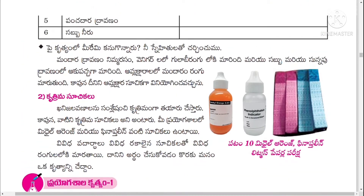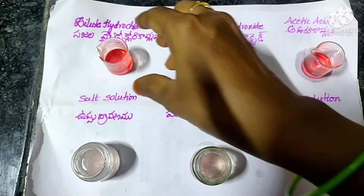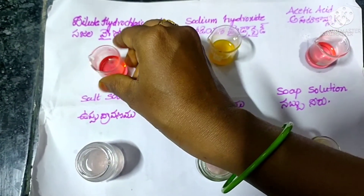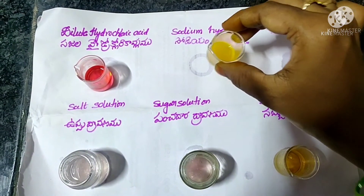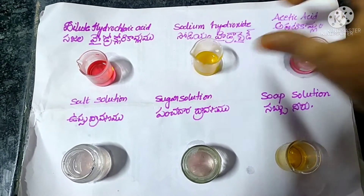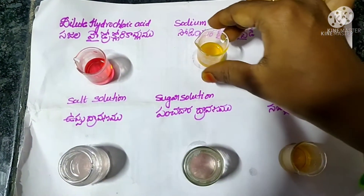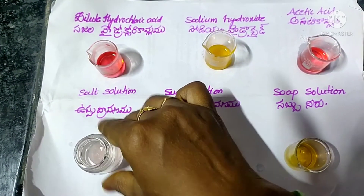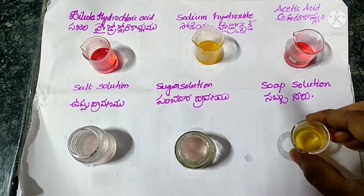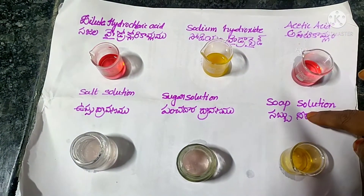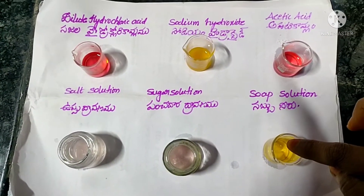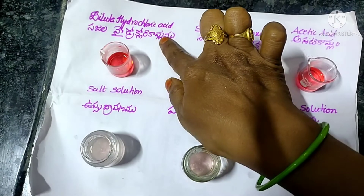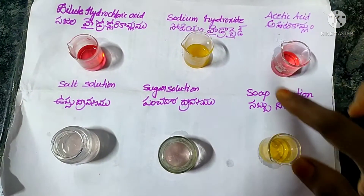The next indicator is methyl orange. Add two drops of methyl orange to dilute hydrochloric acid — the solution turns red. Add methyl orange to acetic acid solution — it also turns red. Add methyl orange to salt solution and sugar solution — no color change. Add methyl orange to soap solution — it turns yellow, indicating a base.